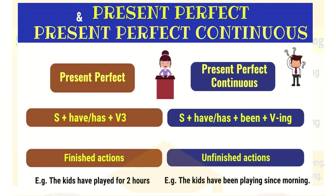A question may arise: what is the difference between present perfect and present perfect continuous? They are quite similar, yet a little different. In the present perfect, we use 'have' or 'has' plus the verb in its third form. And for present perfect, the action has already been completed — 'I have finished cooking', 'I have finished my homework'.